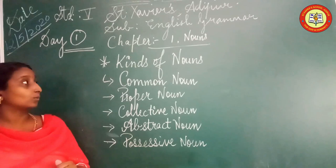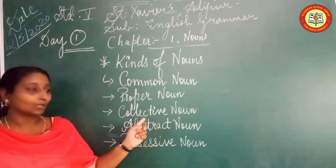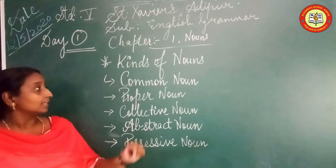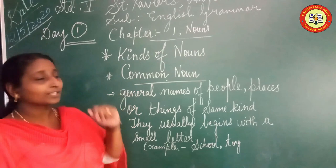There are different kinds of Noun. As I've written here on the board: Common Noun, Proper Noun, Collective Noun, Abstract Noun and Possessive Noun. I will be telling you in detail each different type of Noun with examples.